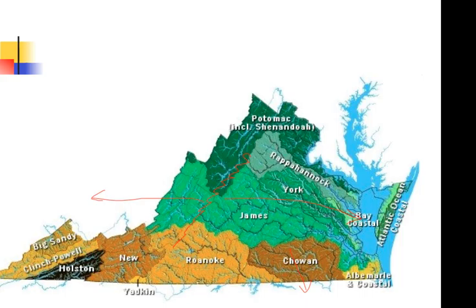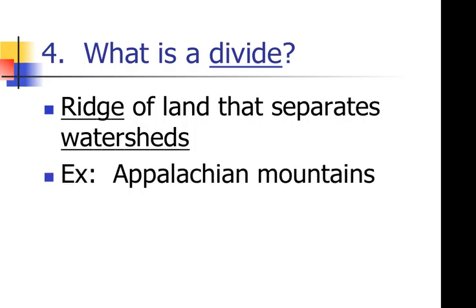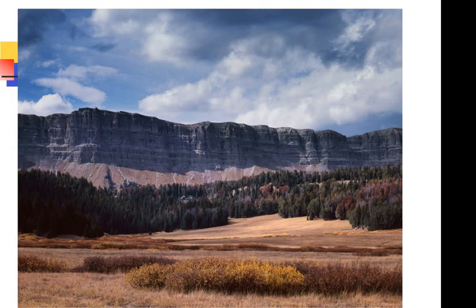Now let's look at what a divide is. Think about the mountains and how they divide the land. A divide is a ridge of land that separates watersheds. A good example in Virginia is the Appalachian Mountains — they split up out of the ground and divide the land. Hopefully you're writing down: divide, ridge, and watersheds. Here's a picture of a divide — see how it juts up and separates the land.